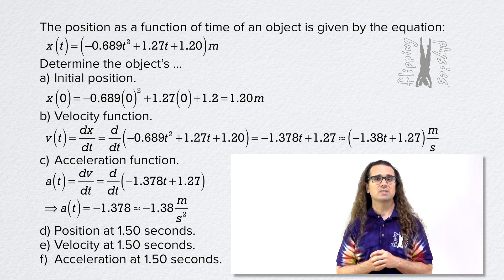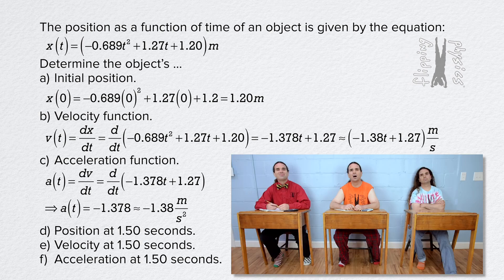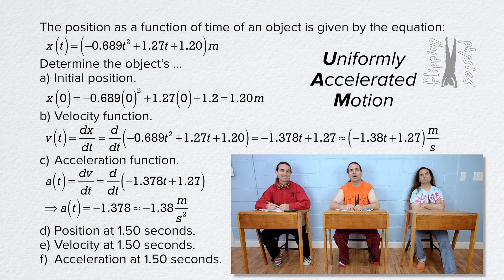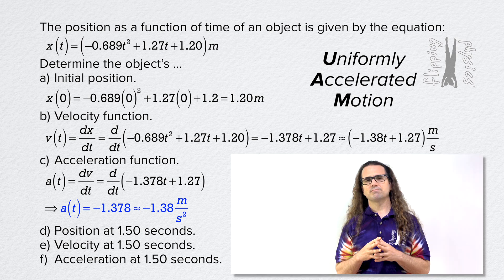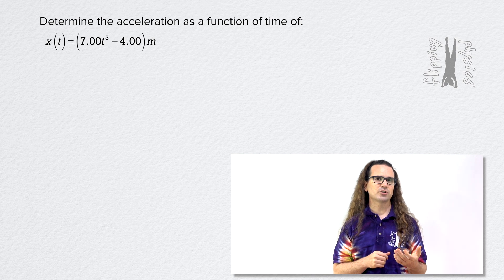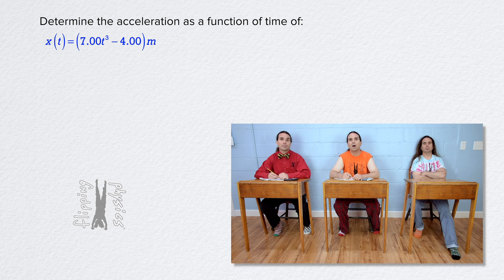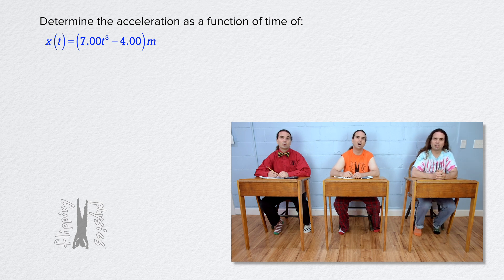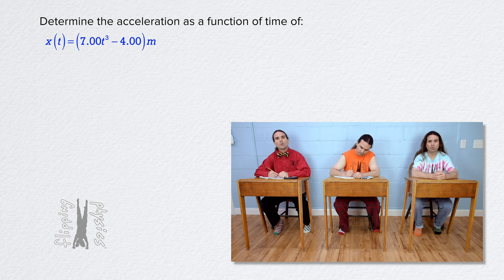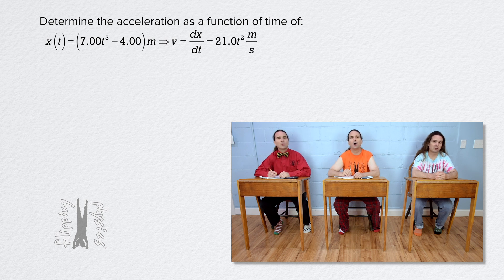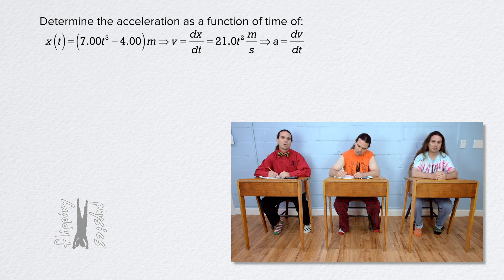So who can tell me what type of motion this object is experiencing? It's uniformly accelerated motion. How do you know that? The acceleration equals a number — that's what uniformly accelerated motion means, the acceleration is constant. Actually, let's take a short detour. For the position function: position equals 7 times time cubed minus 4 meters. Velocity equals the derivative, which is 21.0 times time squared meters per second. Acceleration equals the derivative of velocity, which is 42.0 times time meters per second squared.